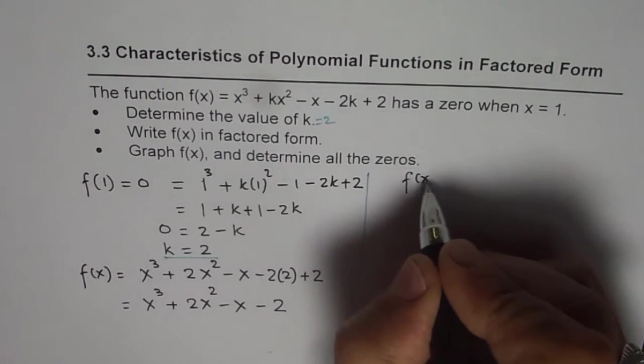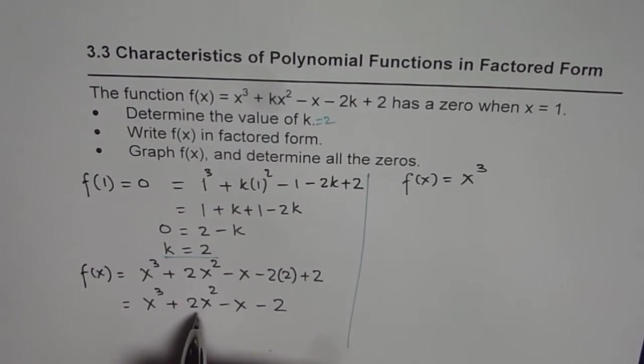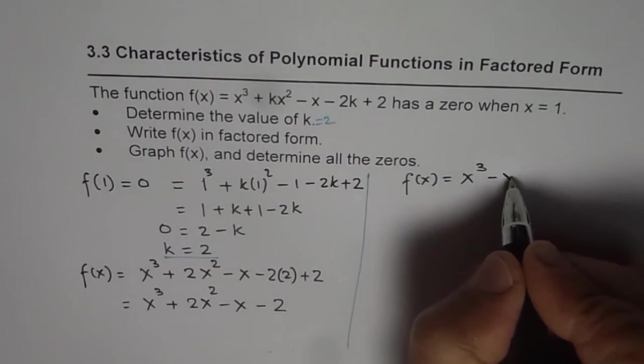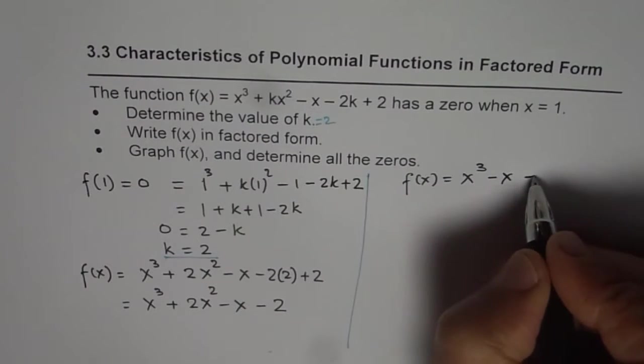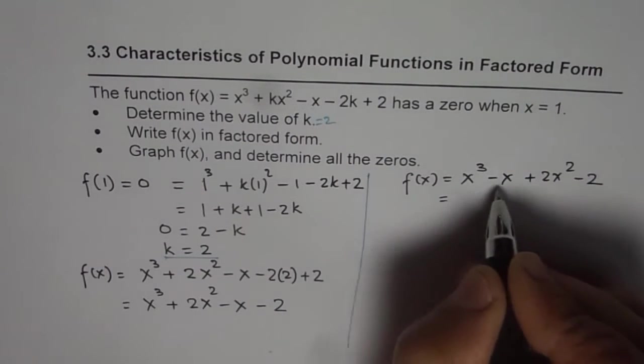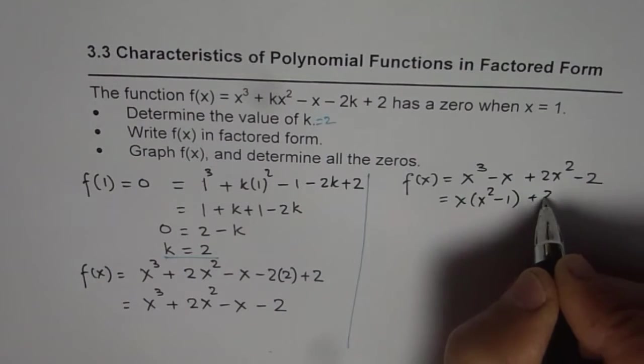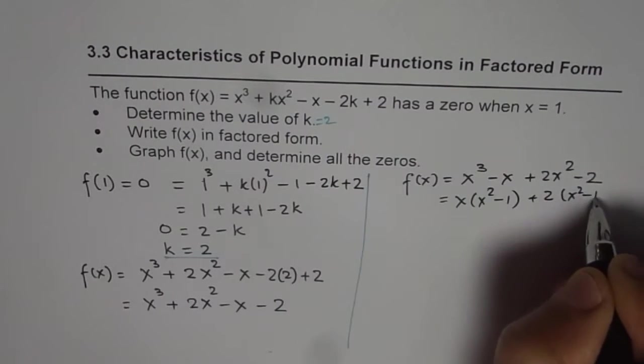So let us write it down again and factor. We have f(x) equals x cubed plus, let me rearrange, I can write minus x here, and 2x squared plus 2x squared minus 2. x is common, so we get x squared minus 1. Here 2 is common, x squared minus 1.